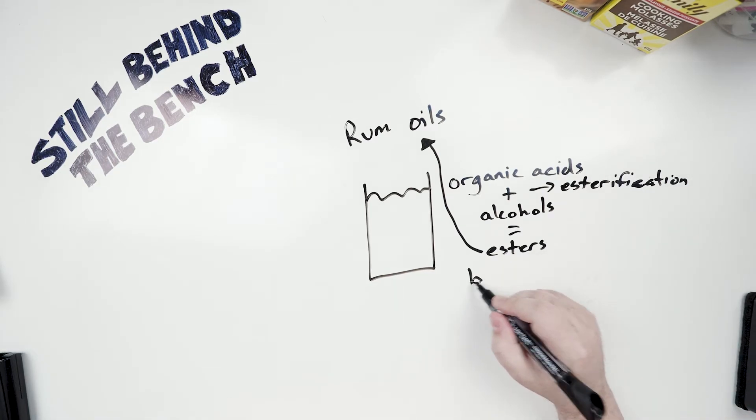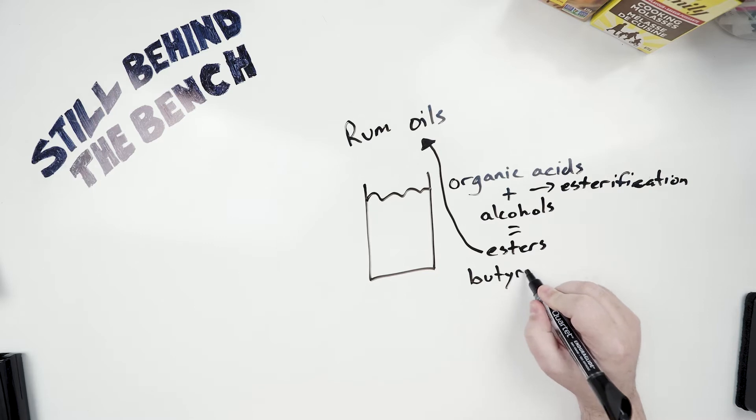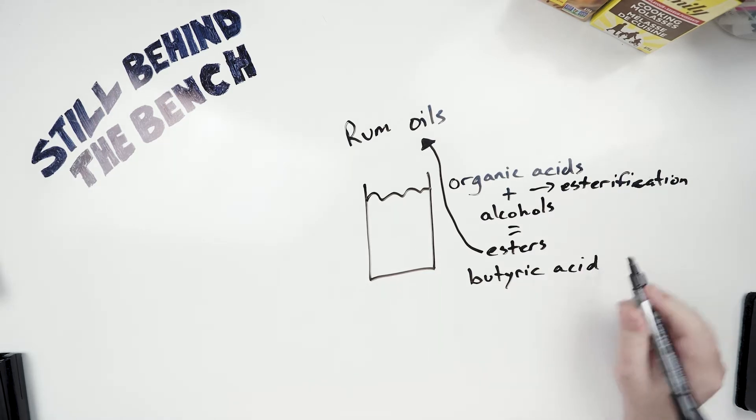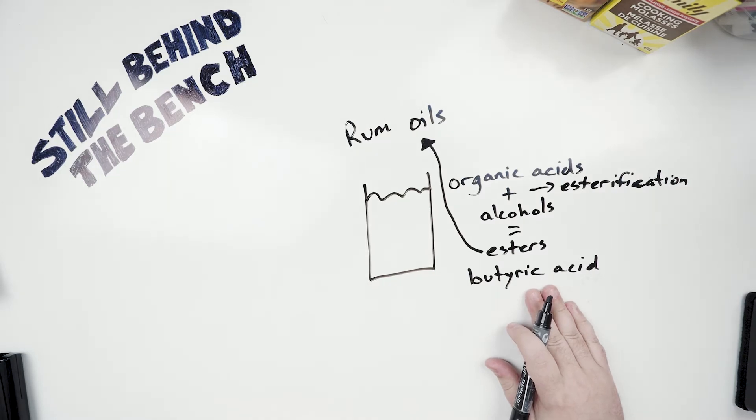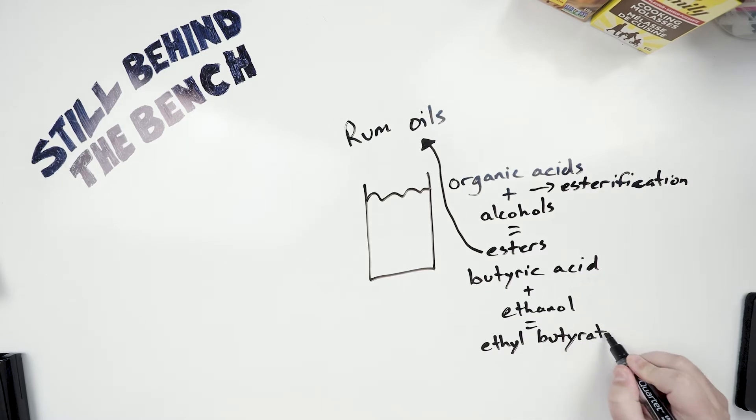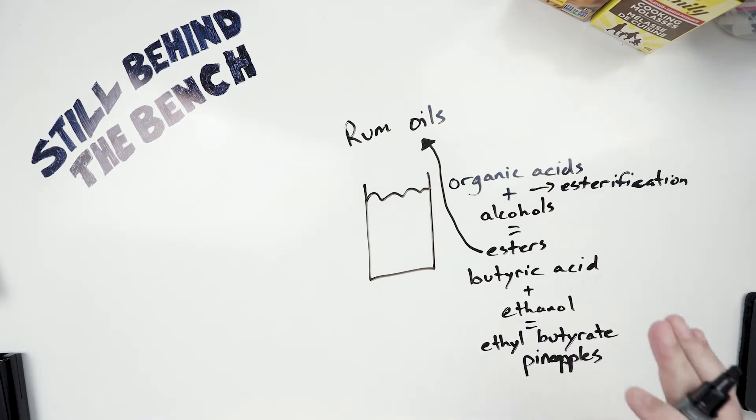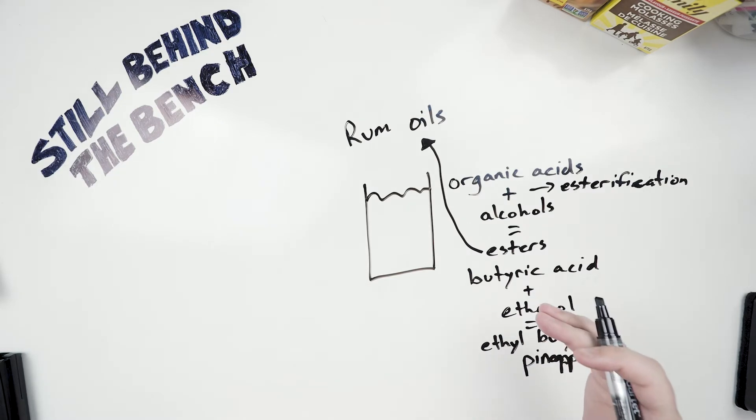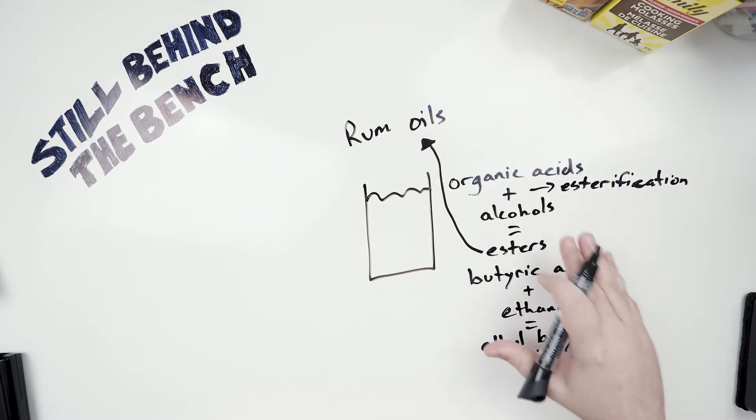A good example would be butyric acid - I don't know if you know much about butyric acid but it smells like vomit. But when you mix butyric acid and ethanol you get a compound called ethyl butyrate. It's an ester and it smells and tastes like pineapples which as you can imagine in a rum is pretty awesome. So this is why we want to use muck. It won't happen as much in dunder but it can still happen.